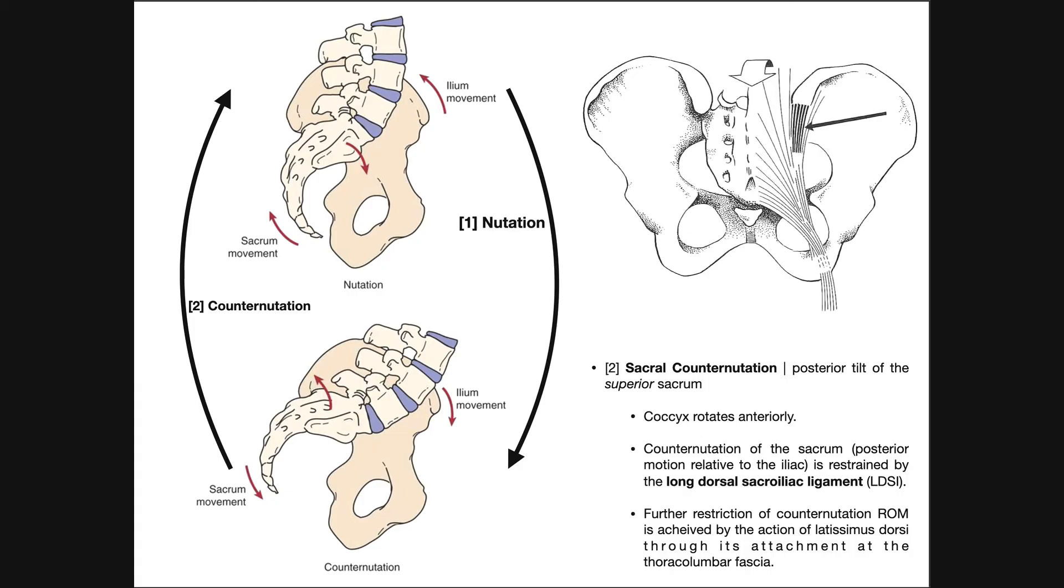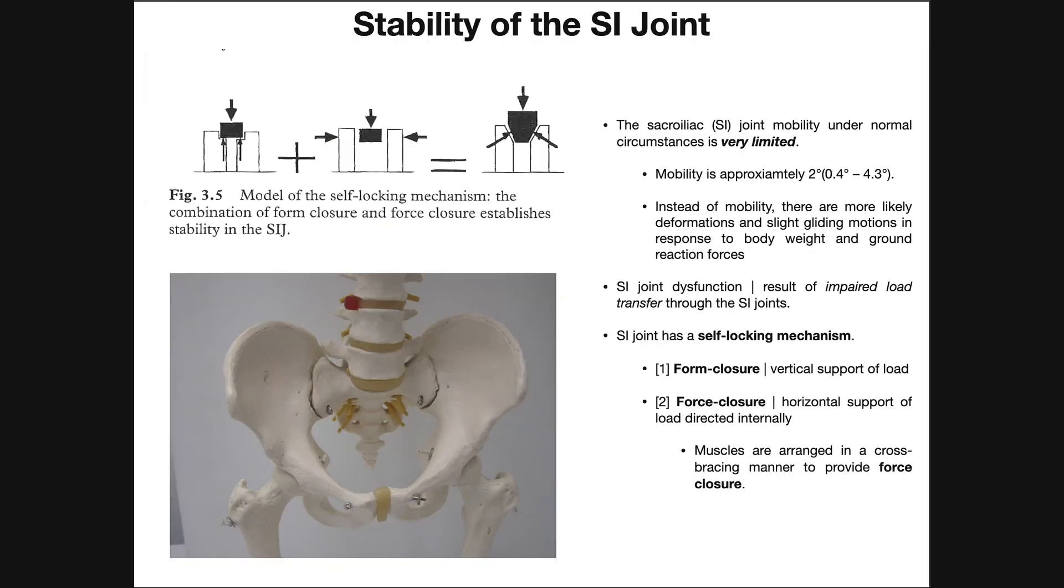And the main takeaways from this video are really just to understand what creates this massive stability of the SI joint, and really understanding that its mobility is extremely low. Mobility is about two degrees. You won't even be able to detect two degrees. Go on a goniometer and measure out two degrees. If you tried that motion, you may not even be able to detect that at all.